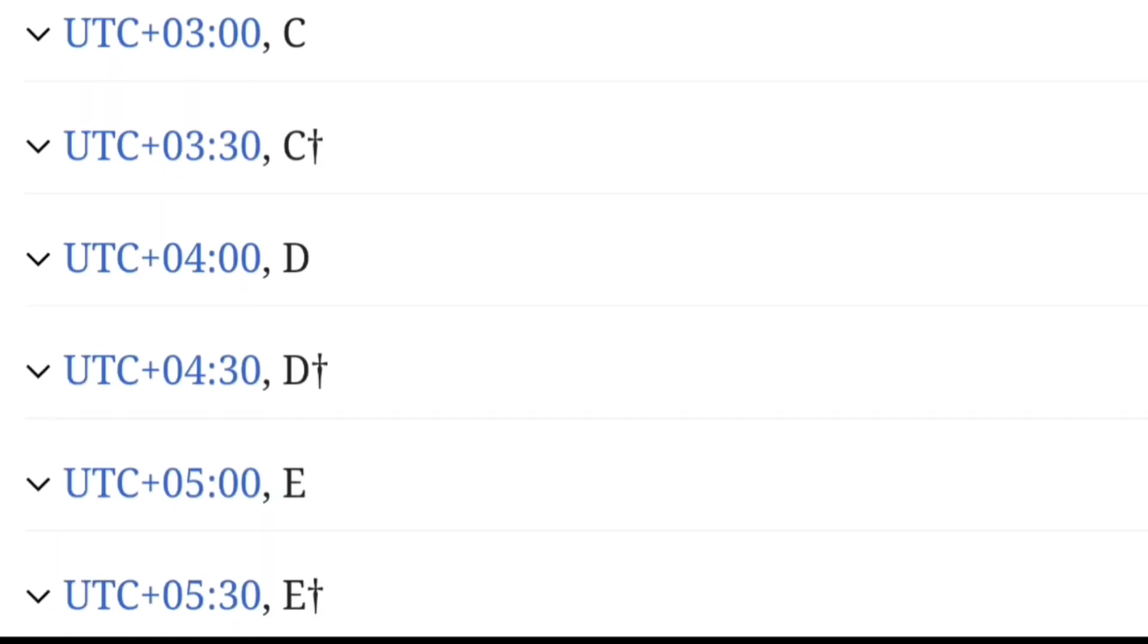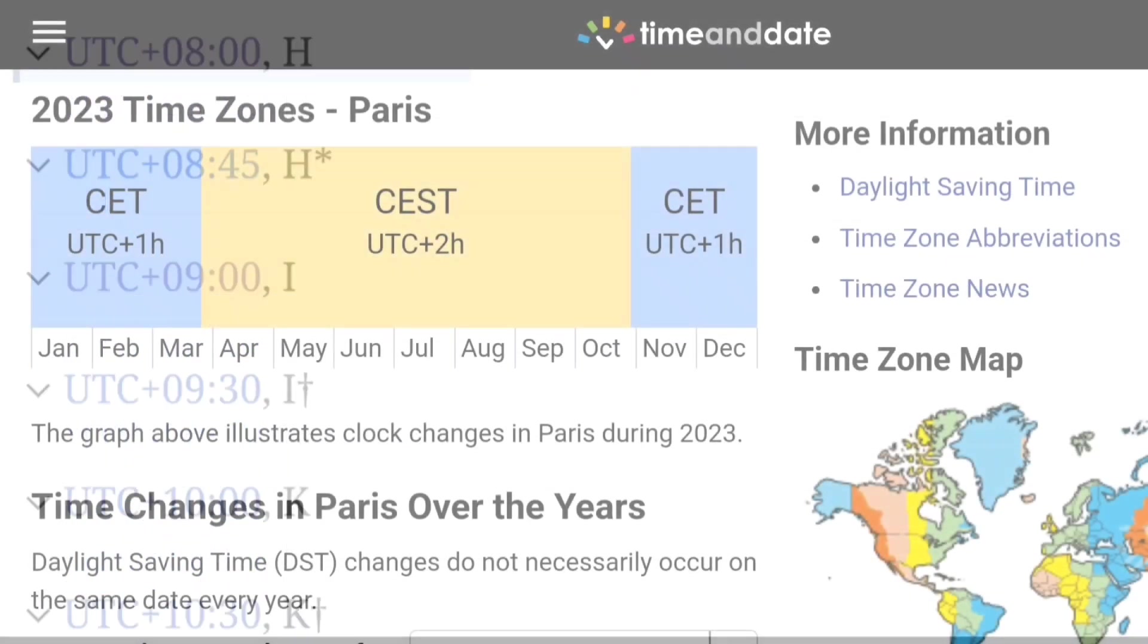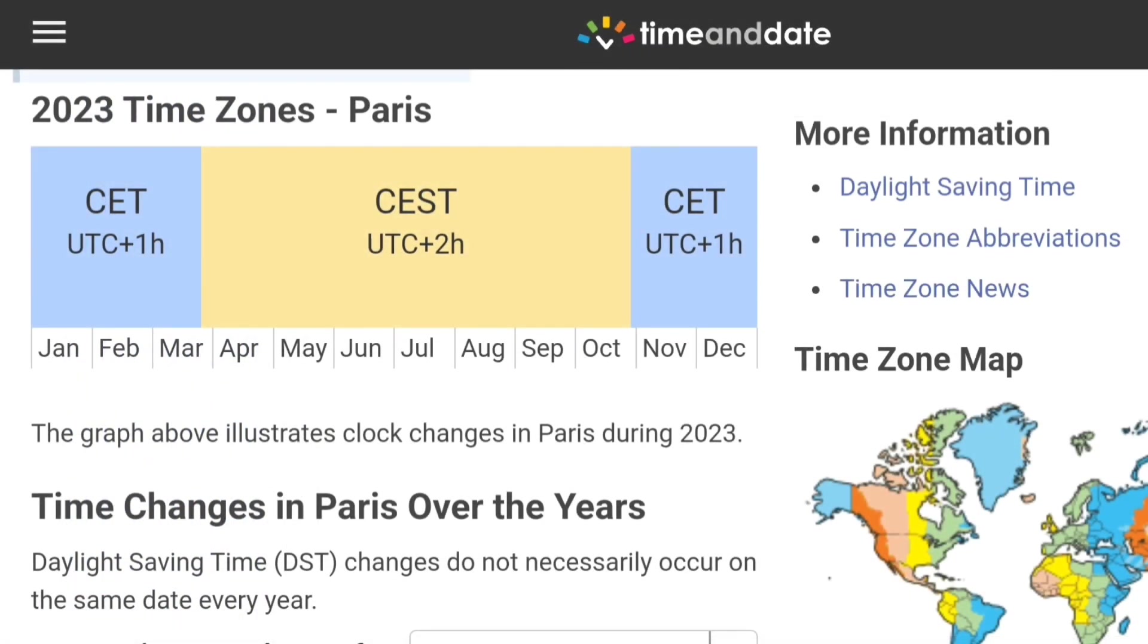Example 1. You live in Paris. Google Paris UTC time now. You will find out that Paris is in UTC plus 2 time for part of the year, and UTC plus 1 time for rest of the year. From April to October UTC plus 2, and from November to March UTC plus 1.